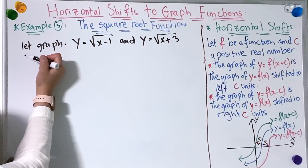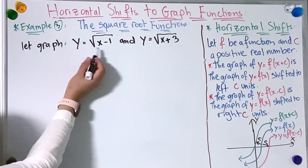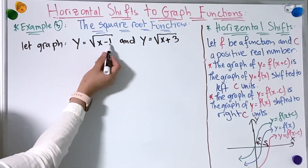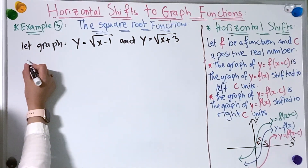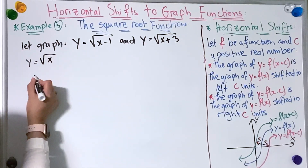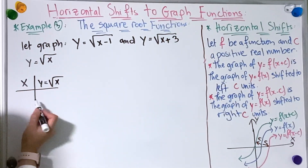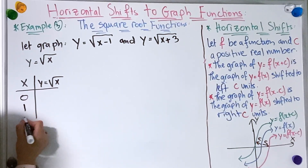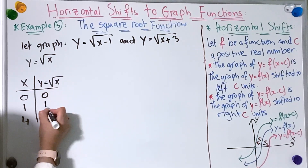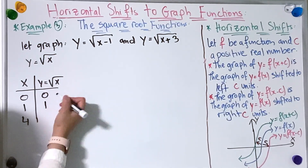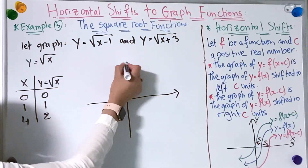For the third example, I'm going to use the square root function. Let's graph both functions: y = √(x − 1) and y = √(x + 3). First, let's graph y = √x. Starting with the table — x and y = √x — taking random numbers: 0, 1, and 4. So: √0 = 0, √1 = 1, √4 = 2.